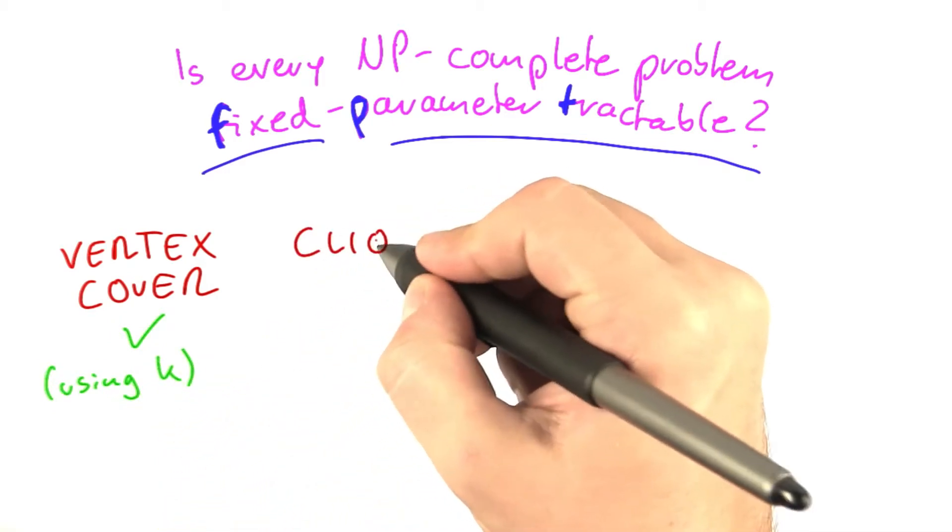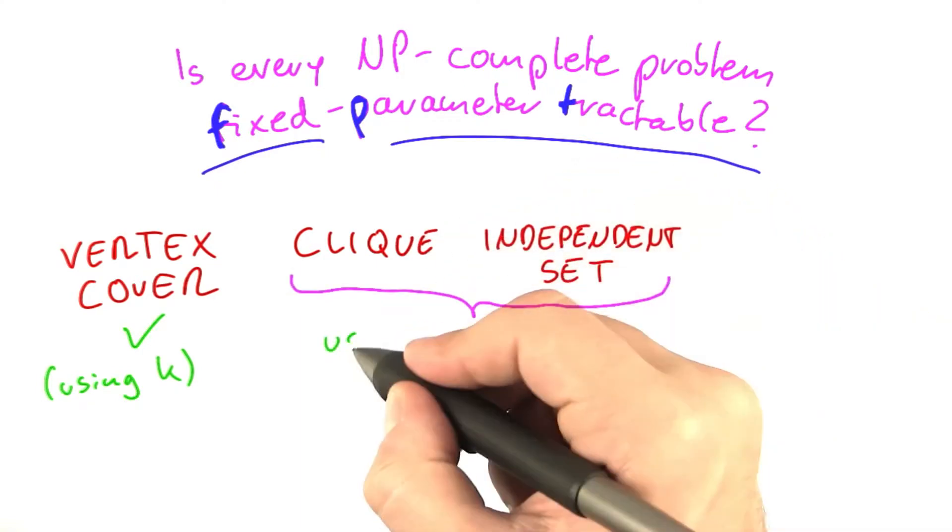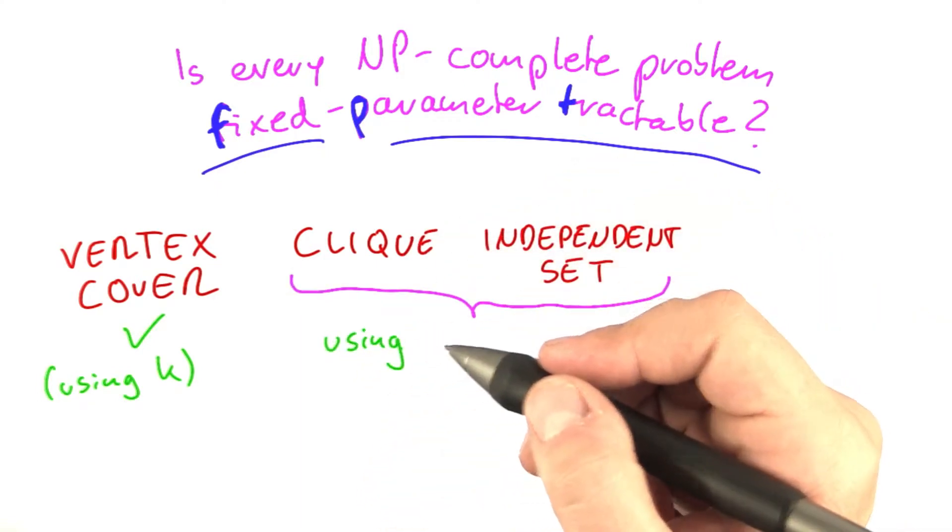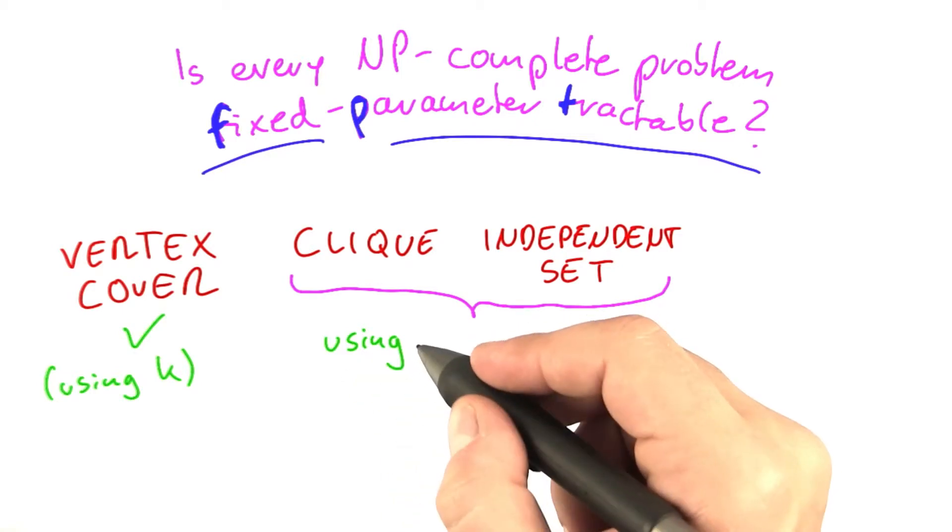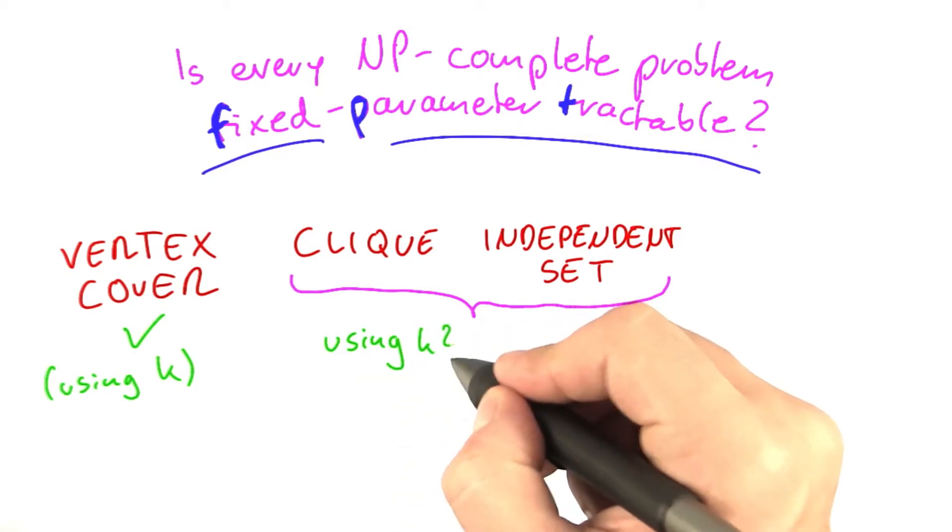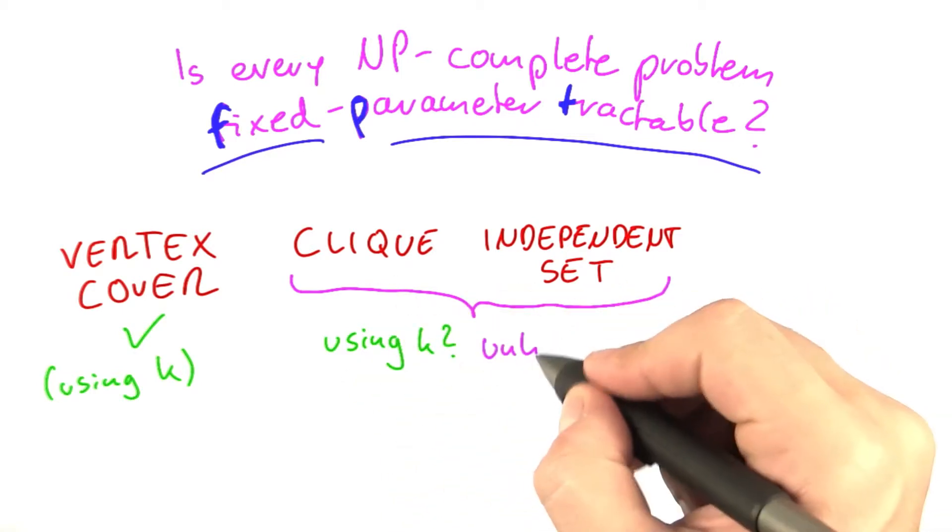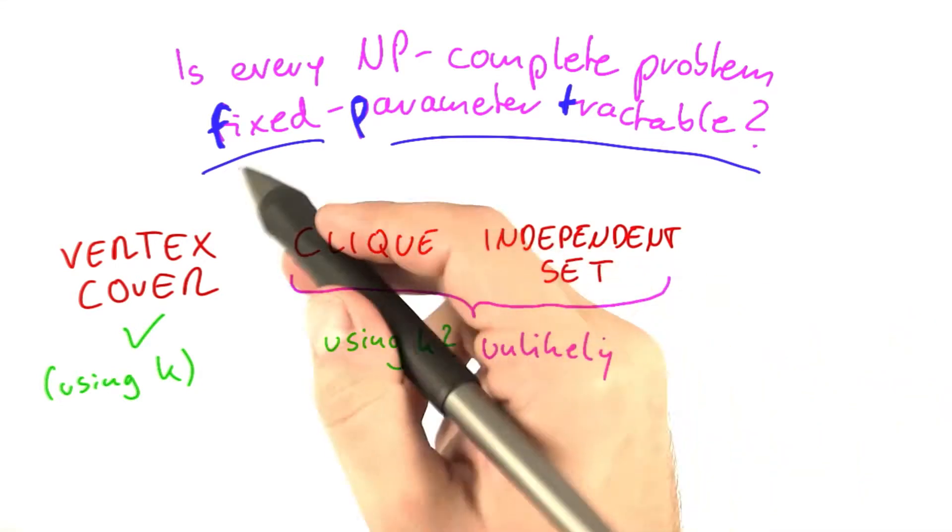Now, what about clique and independent set? And again, we can consider these two problems together because they're so similar. And here, unfortunately, I have a bit of bad news for you because using k, by which I mean the size of the solution, that's highly unlikely to be fixed parameter tractable.